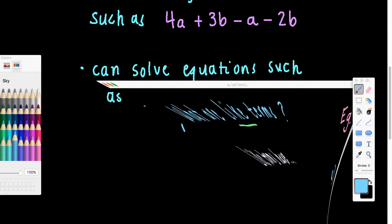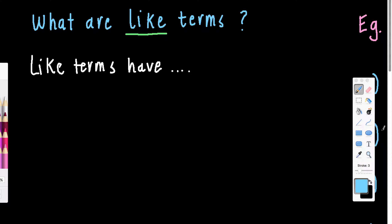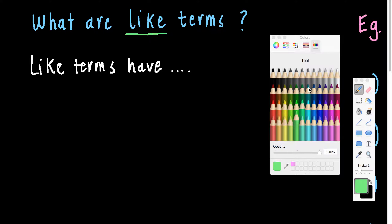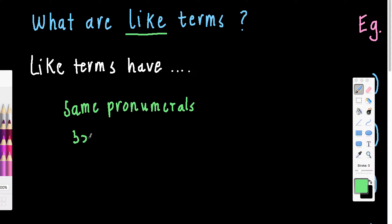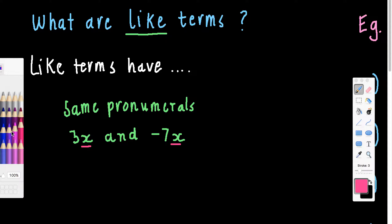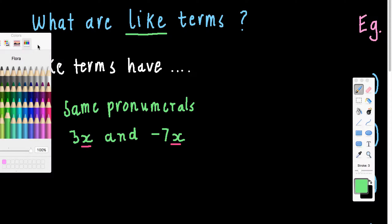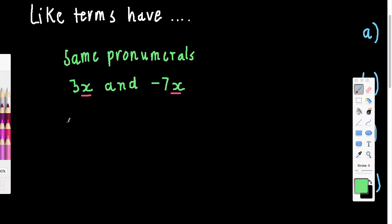Let's get into what like terms are. When you're looking at two terms, you want to decide: am I looking at the same term — are they alike? Like terms will have the same pronumerals. It's not just about sharing one in common; they have to have exactly the same combination of pronumerals.